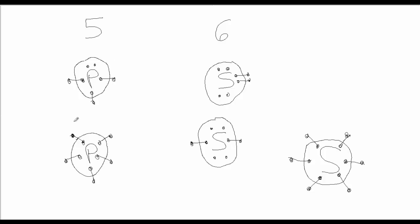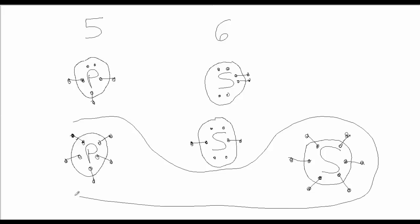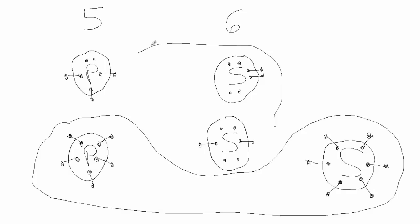These two cases — phosphorus with five single bonds and sulfur with six single bonds — are where we see atoms disobeying the octet rule, having more than eight electrons total around the atom. The other forms of phosphorus and sulfur obey the octet rule and bond similarly to their group counterparts: phosphorus like nitrogen, and sulfur like oxygen.